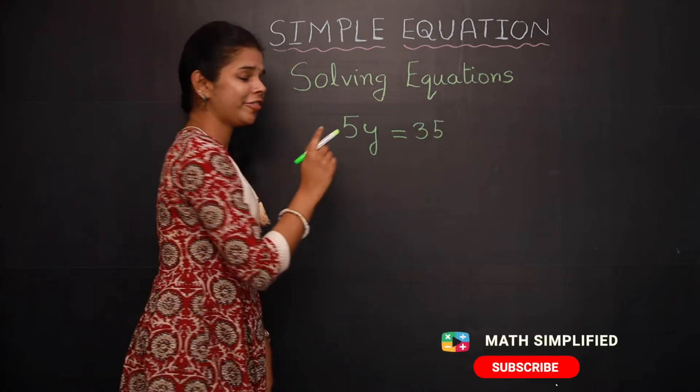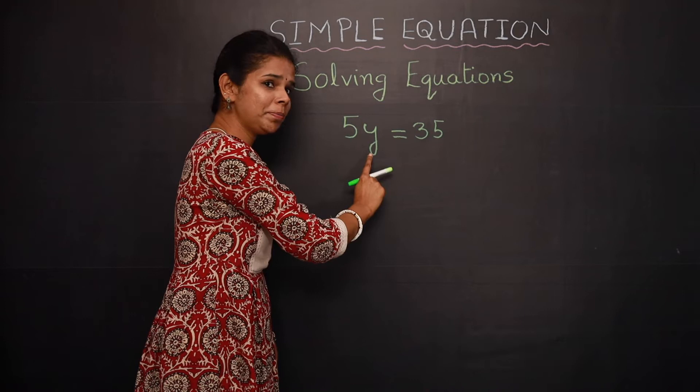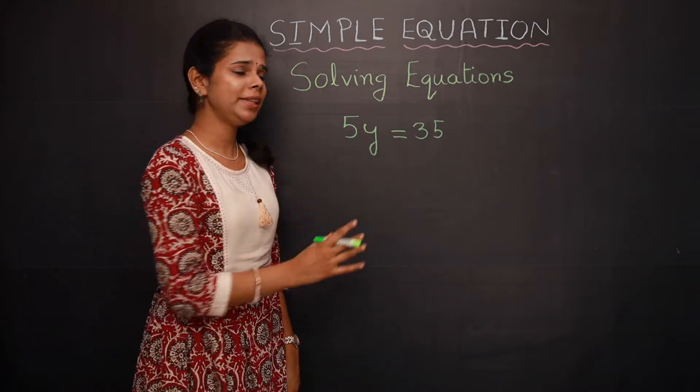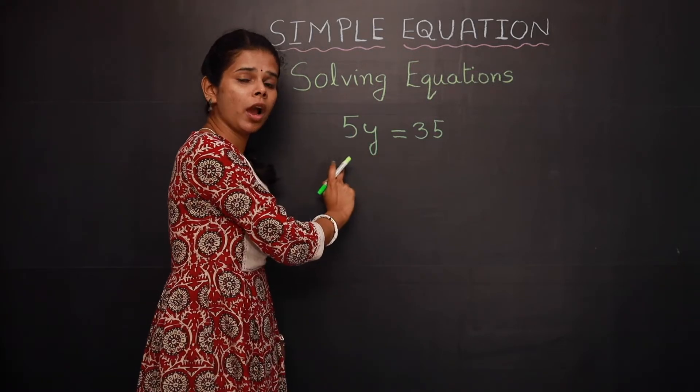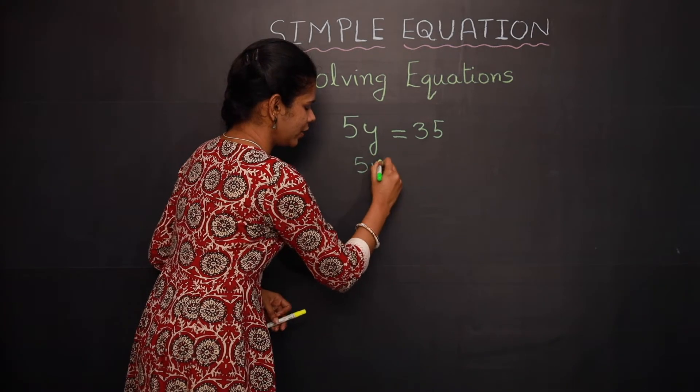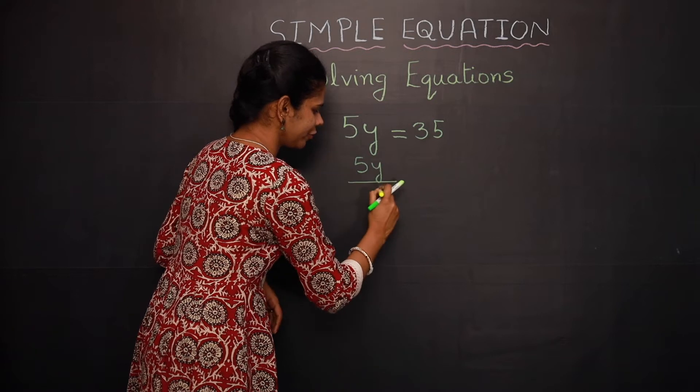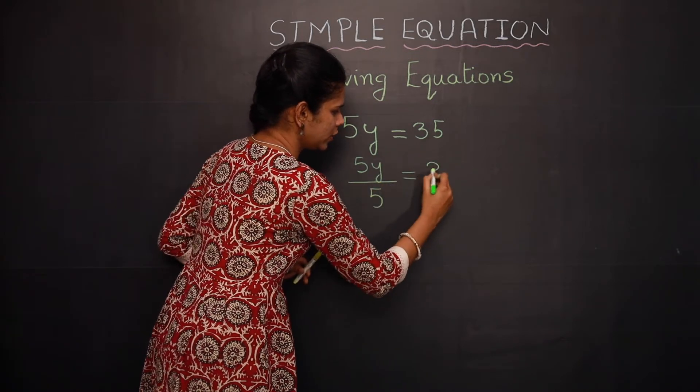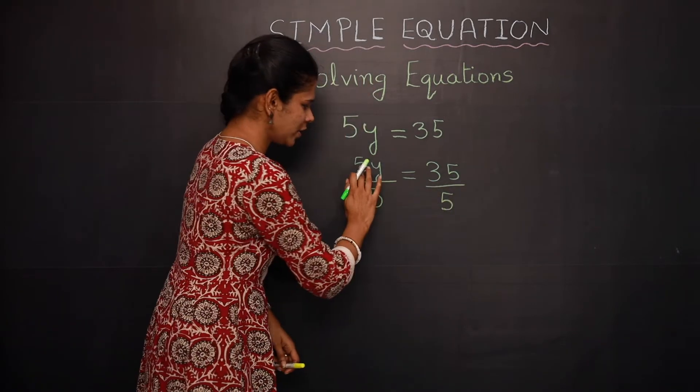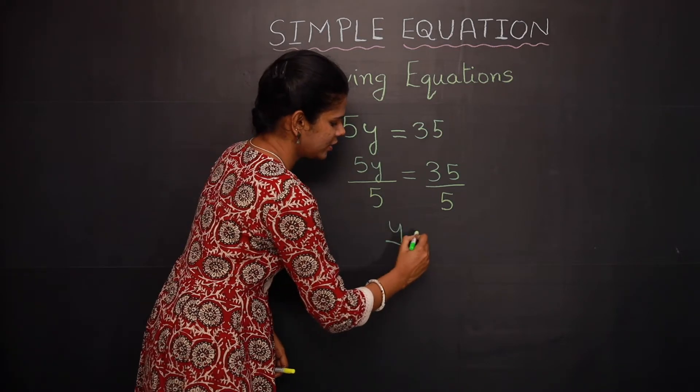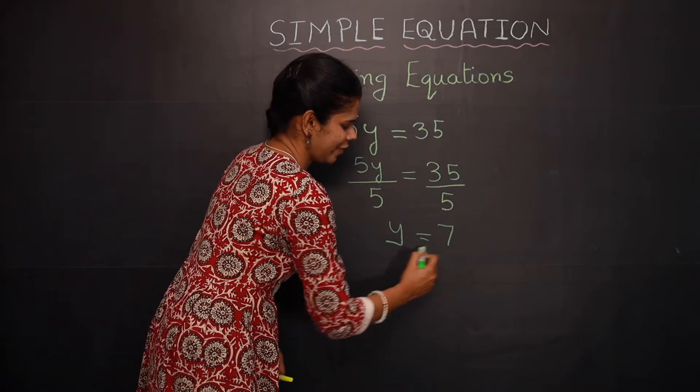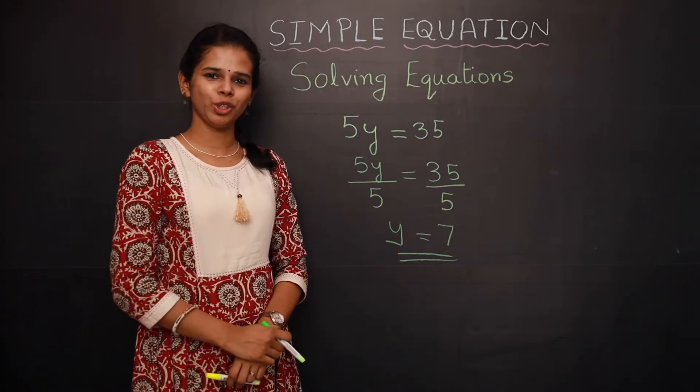5y equal to 35. Here 5y means 5 multiplied by y is equal to 35. Here we need to separate the variable y from 5. How will you remove 5? So 5y divided by 5 equal to 35 divided by 5, so it becomes 5 5 gets cancelled and y is equal to 35 divided by 5, and it is 7. So y equal to 7 is a solution of this equation.